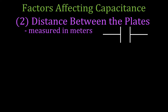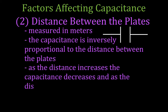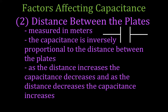What about the distance between the plates? The distance between the plates is measured in meters. The capacitance is inversely proportional to the distance between the plates. That means that as the distance increases, the capacitance decreases. And as the distance decreases, the capacitance is going to increase — they're inversely proportional to each other. That is because as the plates get closer together, the charges on this plate have a greater effect because they're closer to the charges on this plate. As you separate the plates, the charges have less effect on each other because they're farther apart.